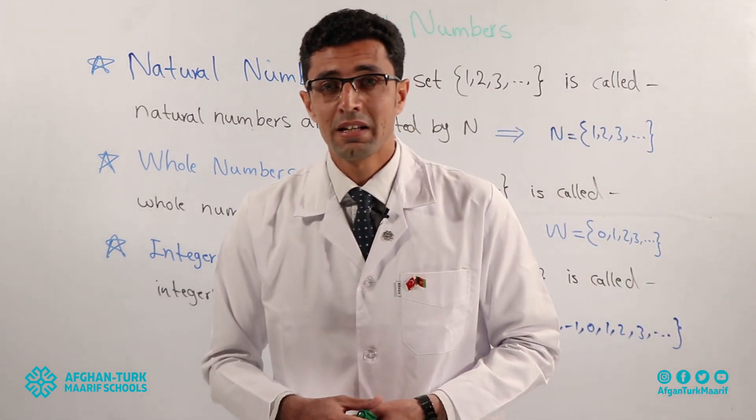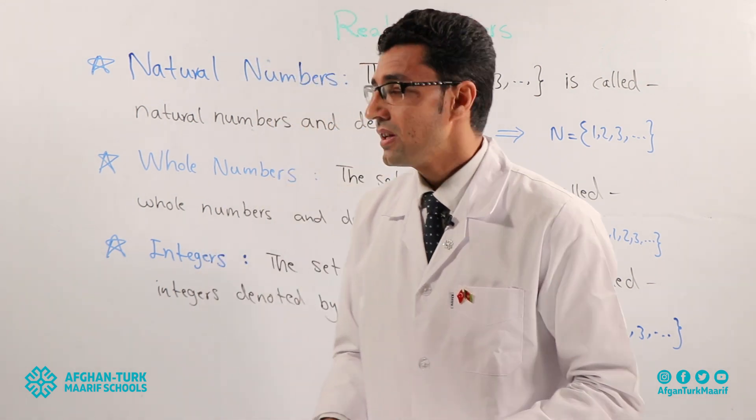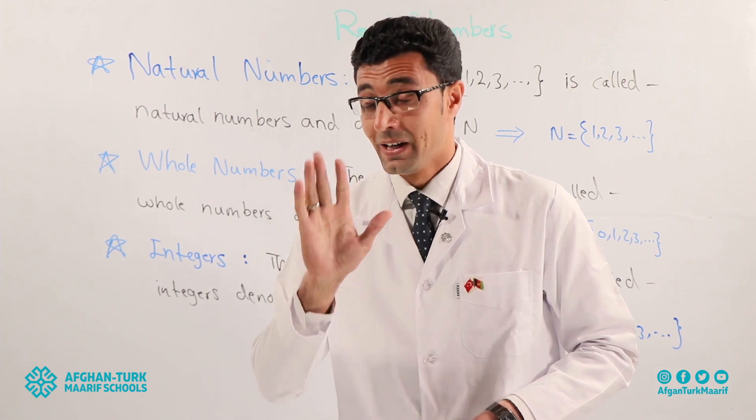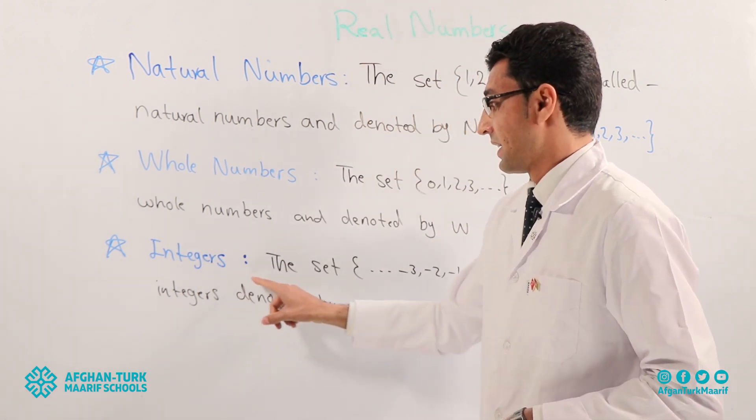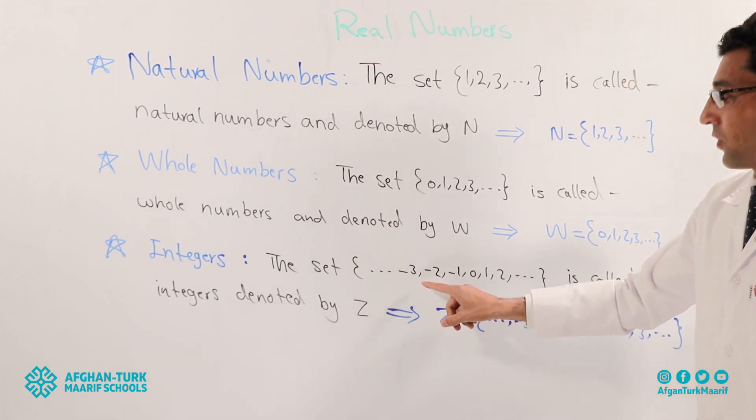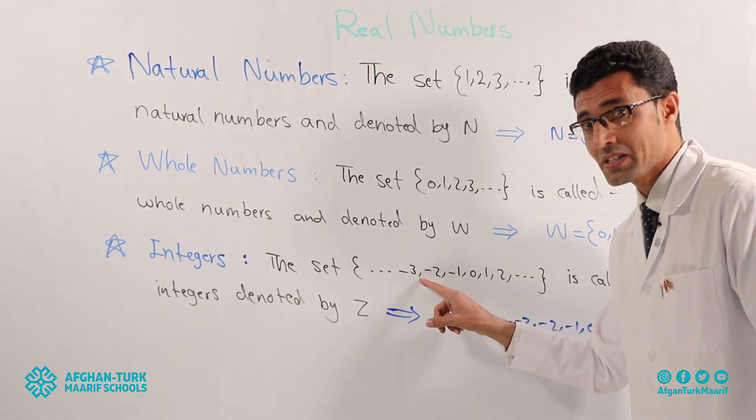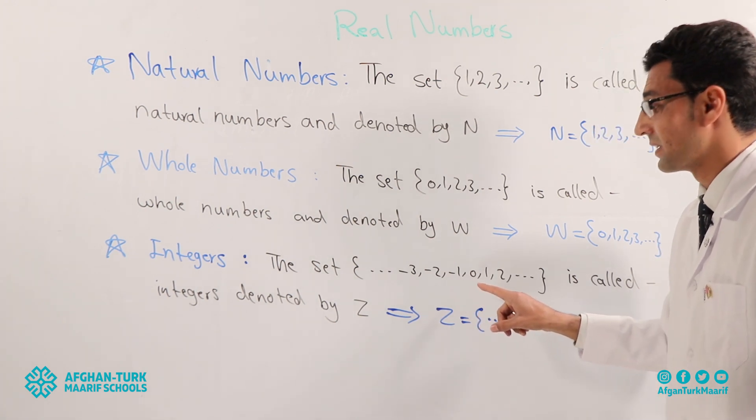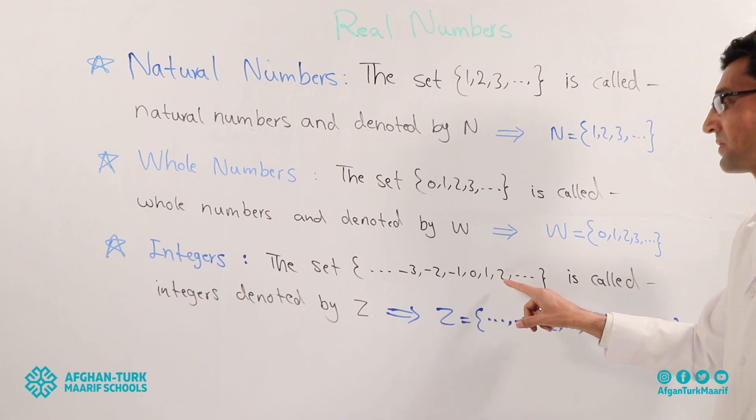Okay? Now we are going to understand the other numbers. Another numbers. What do we call? Integers. Integers? No. What do we call? Integers. Integers. The set which has negative numbers. You see. What is that? Minus three. Minus two. Minus one. And also zero. And the natural numbers. One. Two. Three.